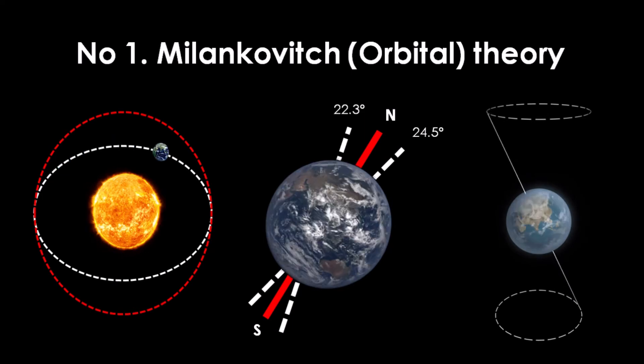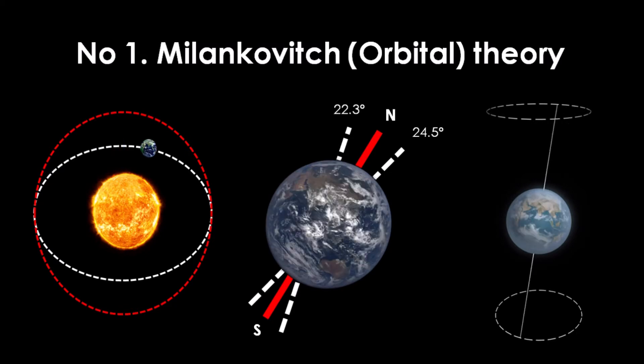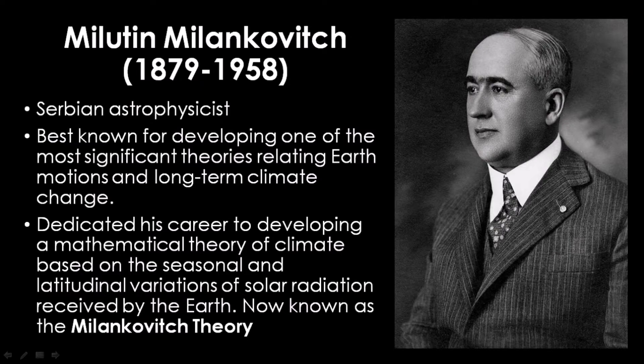The Milankovitch or orbital theory includes three main concepts: eccentricity, obliquity and precession. This concept was actually created and hypothesized by Milutin Milankovic, a Serbian astrophysicist best known for developing one of the most significant theories that relates to the Earth's motions and long term climate change.